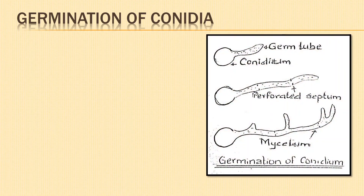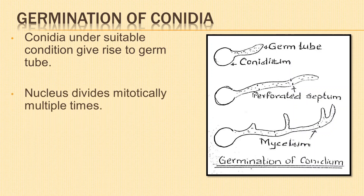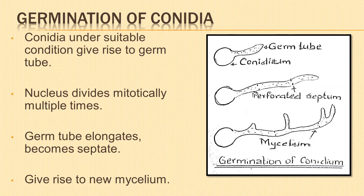They are easily disseminated by the wind and is a quick means of propagation. Germination of conidia: when the conidia falls on a suitable substratum under suitable conditions, it swells and gives rise to a germ tube. The nucleus of the conidium divides mitotically multiple times and the nuclei so formed remain in the germ tube. The germ tube elongates and becomes septate. On further elongation and septa formation, it gives rise to a mature branched mycelium.